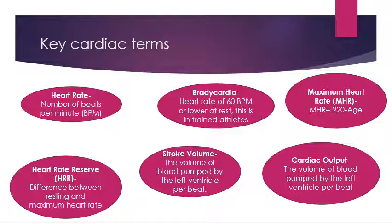Starting with heart rate — quite simply it refers to the number of beats per minute, BPM. Moving to the top right, maximum heart rate, otherwise known as MHR, is measured as 220 minus your age. For example, if you're 15 years old: 220 minus 15 equals 205, giving a rough maximum heart rate of 205.